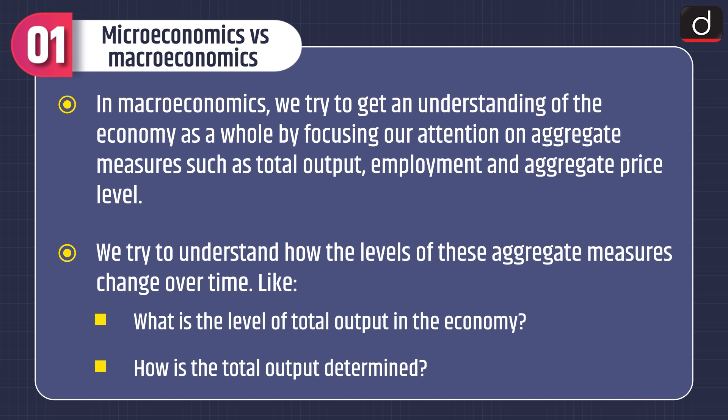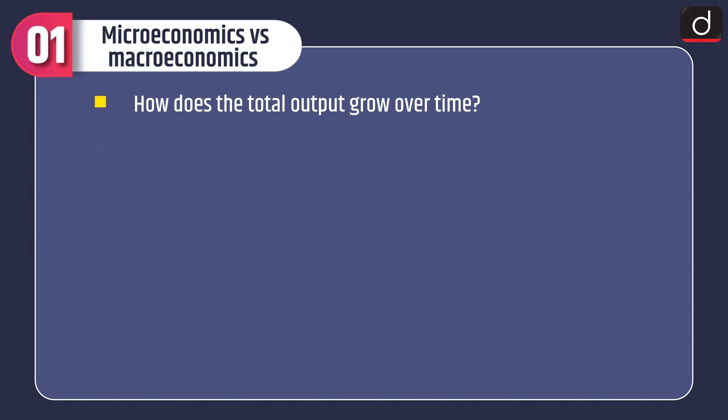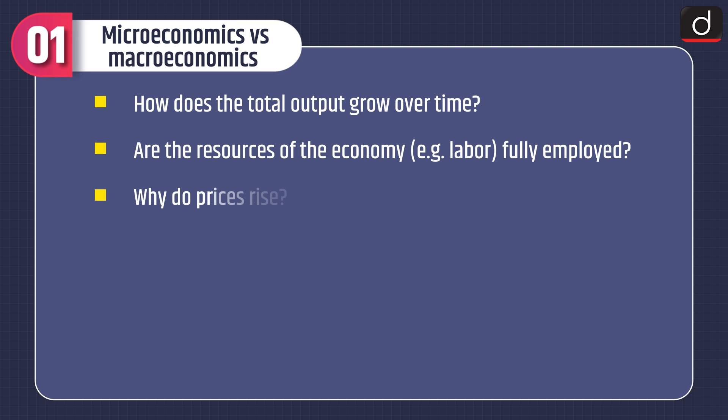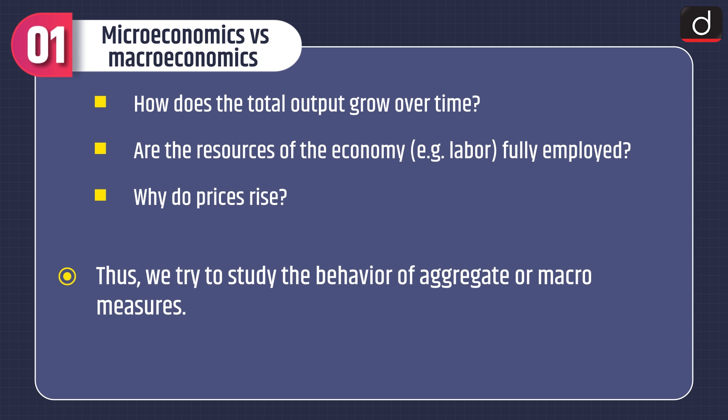We try to understand how the level of these aggregate measures change over time. What is the level of total output in the economy? How is the total output determined? How does the total output grow over time? Are the resources of the economy — example, labor — fully employed? And why do prices rise? Thus, we try to study the behavior of aggregate or macro measures.